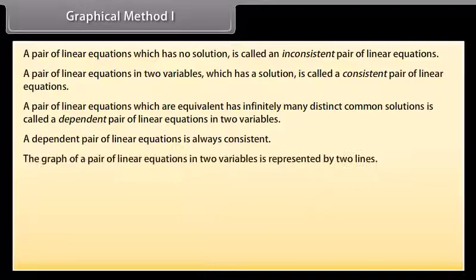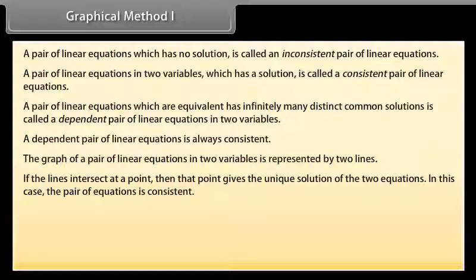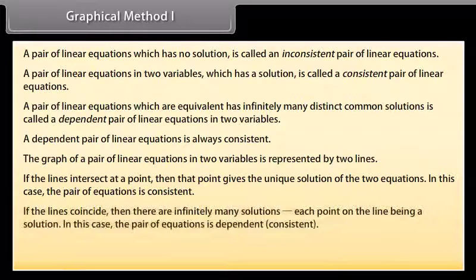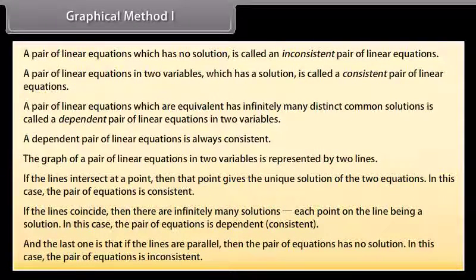The graph of a pair of linear equations in two variables is represented by two lines. If the lines intersect at a point, then that point gives the unique solution — the pair of equations is consistent. If the lines coincide, then there are infinitely many solutions, each point on the line being a solution — the pair of equations is dependent and consistent. If the lines are parallel, then the pair of equations has no solution — the pair of equations is inconsistent.